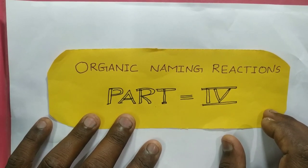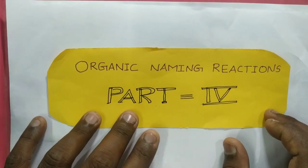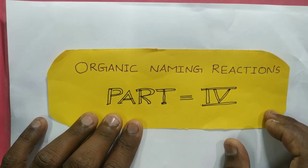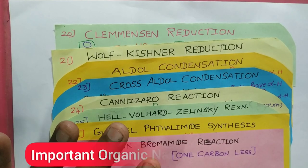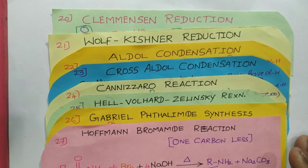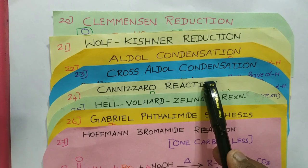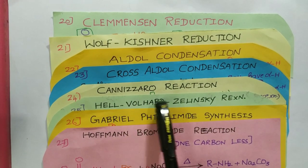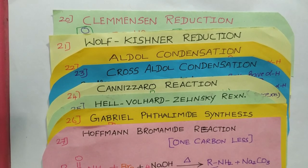Welcome to our channel. Today we are going to talk about important organic naming reactions — Part 4. We already discussed Part 3. Today we are going to discuss reactions like Clemmensen reduction, Wolf-Kishner reduction, Aldol condensation, Cross-Aldol condensation, Cannizzaro reaction, Hell-Volhard-Zelinsky reaction, Gabriel phthalimide synthesis, and Hoffmann bromamide degradation reaction. Let us discuss one by one. The first reaction is Clemmensen reduction.